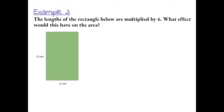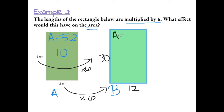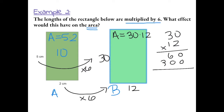Example 2: the lengths of the rectangle below are multiplied by 6. What effect would this have on the area? Let's call this figure A. Our area is 5 times 2, which is 10. Figure B would have lengths multiplied by 6: 2 times 6 gives us 12, and 5 times 6 gives us 30. So figure B would have an area of 30 times 12, which gives us 360.